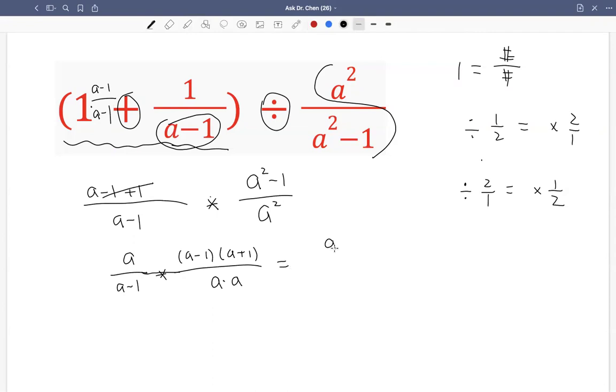Multiplication, we can just do this. Basically, this is what I mean. I multiplied two fractions. I can put them all together. Numerator, I have a times a minus 1 times a plus 1. Denominator, I have a times a times a minus 1.